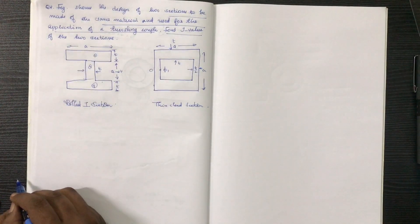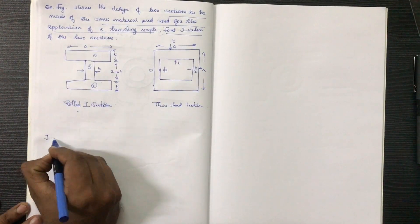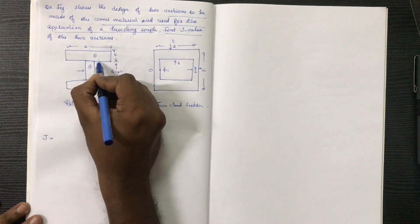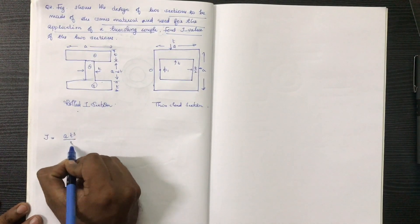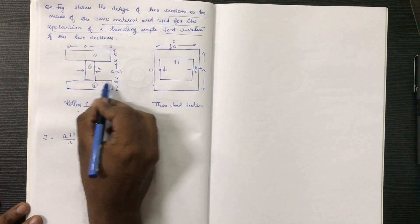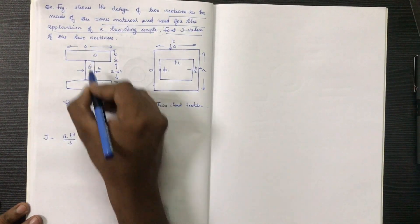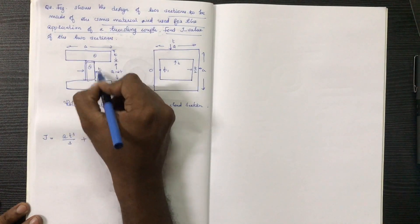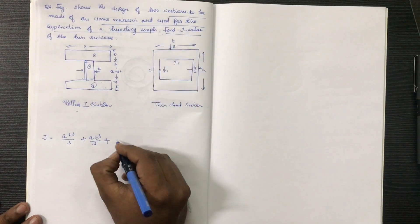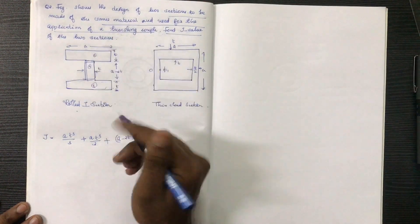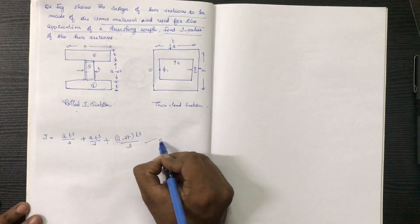J-integral. J-value of two sections. The first session: J is equal to A into a cube by 3. This is a length of A into A. So this is a length of T. Now I have this X — 1 minute time it is A minus 2t. A minus 2t is the length into the thickness, t cube by 3, to work it in the I-section.